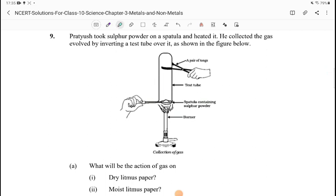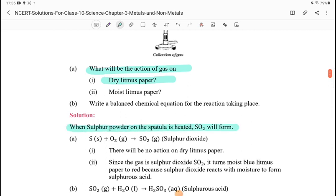Question 9: Pratyush took sulfur powder on a spatula and heated it. He collected the gas evolved by inverting a test tube over it. What will be the action of gas on dry litmus paper and moist litmus paper? When sulfur powder is heated, SO2 will form: S plus O2 gives SO2. There will be no action on dry litmus paper. Since the gas is sulfur dioxide, it turns moist blue litmus paper to red because of its acidic nature. Sulfur dioxide reacts with moisture to form sulfurous acid.